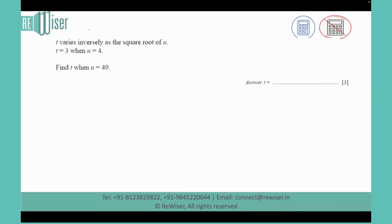Today we have a question from the topic proportions. So let us go ahead and read the question first. T varies inversely as the square root of u, where t is given as 3 when the value of u is 4, and we have to find the value of t when u is 49.